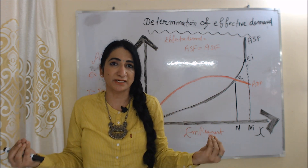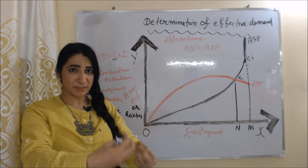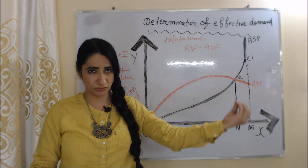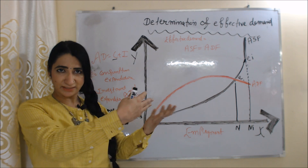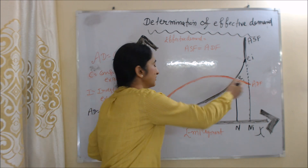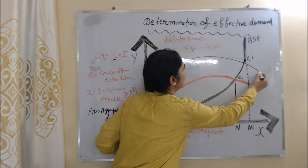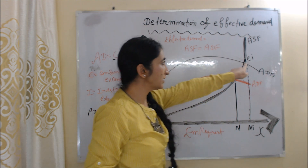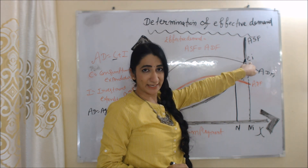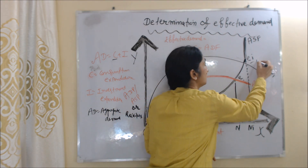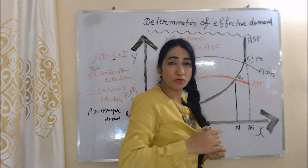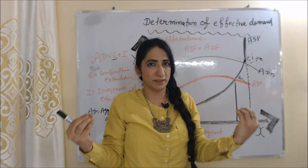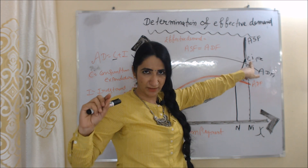In this time period, the government must invest. When the government increases its investment, aggregate demand increases. As aggregate demand increases, output and employment also increase. So when the government increases investment, our ADF curve shifts forward, and the new ADF curve is ADF1. Now the economy reaches the new E point, which is the full employment point. At this point, those people who want to work at existing wages are able to find work. This is our full employment point where all laborers are fully employed.